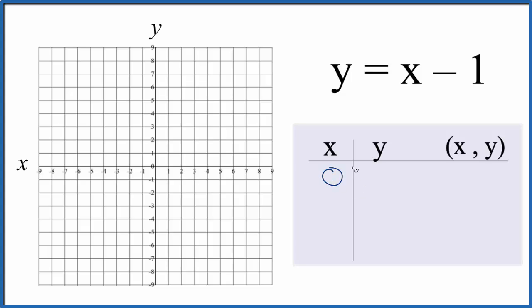So I like to start by putting a 0 in for x because I'm pretty sure that will fit on my graph. If x is 0, 0 plus negative 1, that's just negative 1.